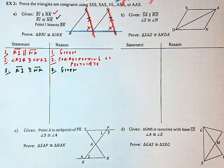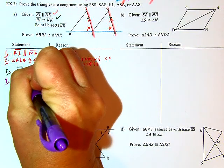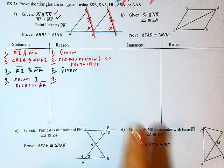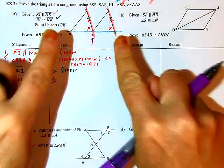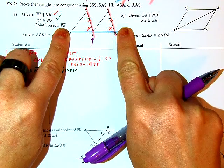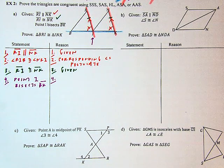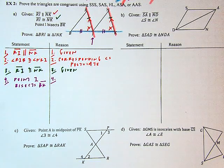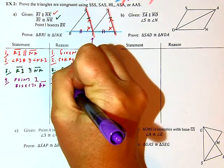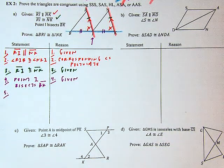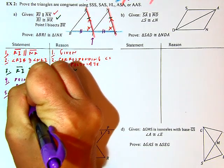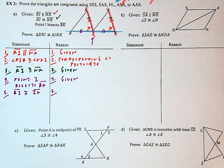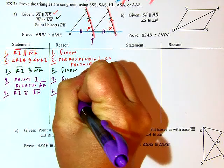Point I bisects BK — given. So point I right here bisects this segment. If I'm bisecting something, that means I'm dividing it into two matching, congruent parts, which I can show with tick marks. Building off of that, I can say that segment BI is congruent to segment IK. My reason would be the definition of bisect.